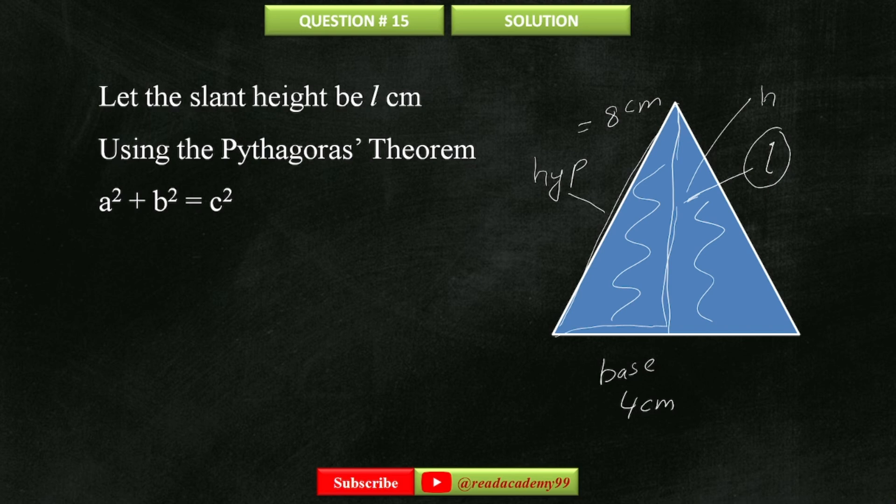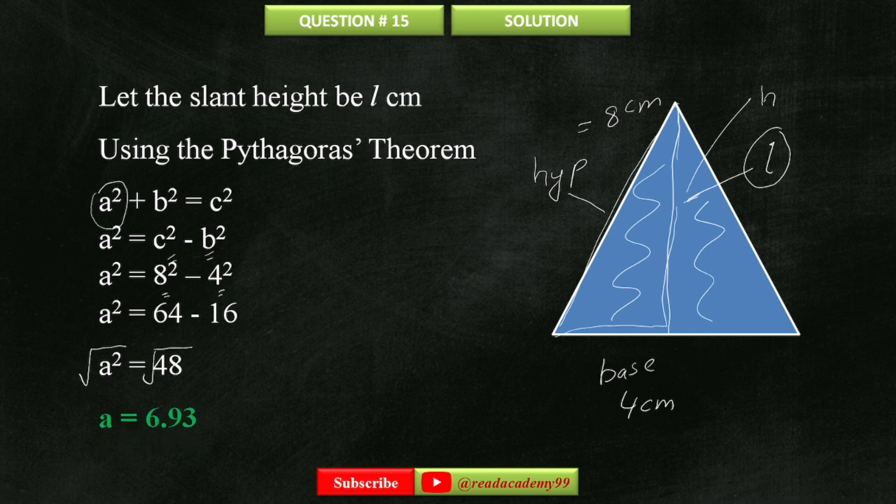Now to find the height, which is A, I'm going to make this A the subject of the equation. Substitute the values of C and B. 8 squared is 64 and 4 squared is 16. 64 minus 16 is 48. Now take square root on both sides. So A equals to 6.93 centimeters, which is the slant height.